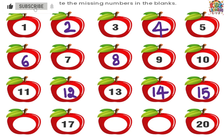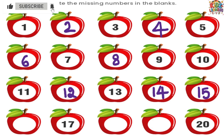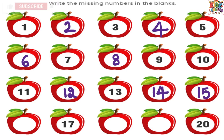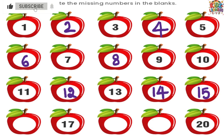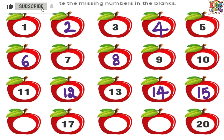No, wait! I see a blank apple. What comes after 15? Oh, let's count: 11, 12, 13, 14, 15. Then... what is it? We have a blank, then 17. So the number before 17 is 16. Let's write 16.